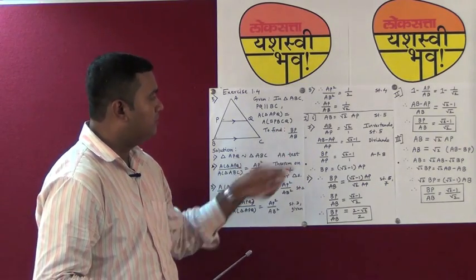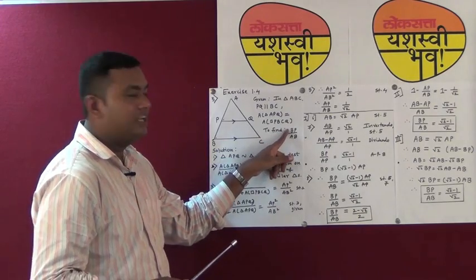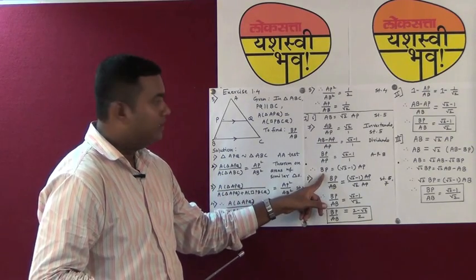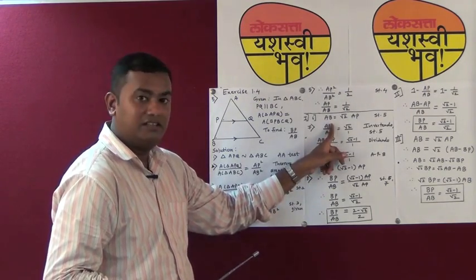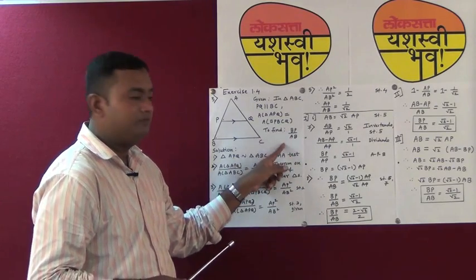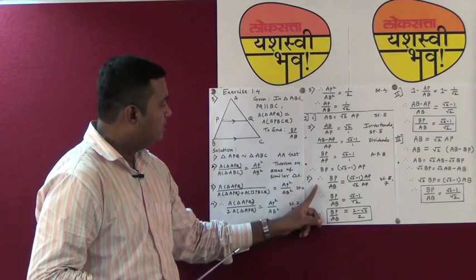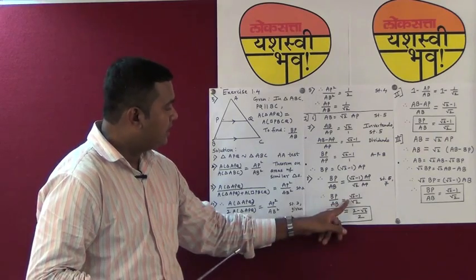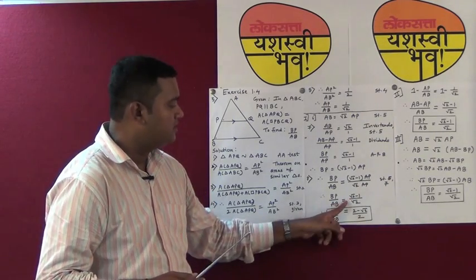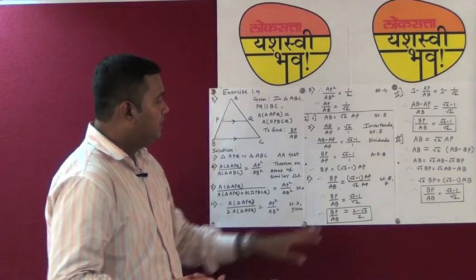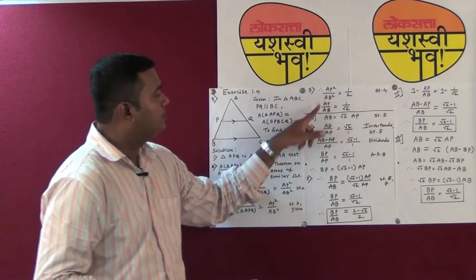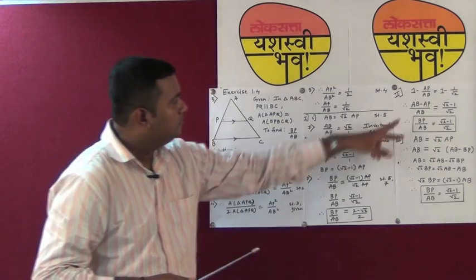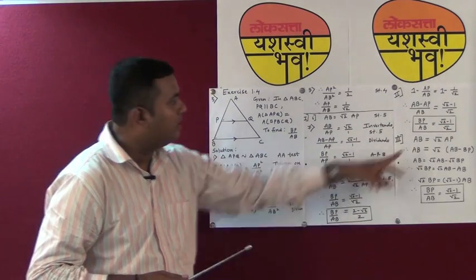After finding AP upon AB equals 1 upon root 2, you can find BP upon AB by three different methods. Method one: find the value of BP using invertendo and dividendo, find AB by cross multiplication, then divide BP upon AB to get the answer, rationalizing the denominator if possible. Method two: subtract this ratio from 1, and by using betweenness, directly get the same value. Method three: cross multiply to get AB equals root 2 into AP; since A, P, B are collinear, AP equals AB minus BP; open the bracket, rearrange the terms, and again get the same answer.